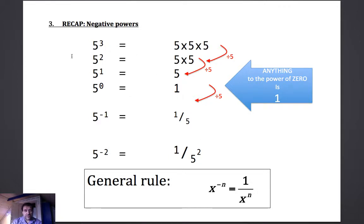The best way to approach this is to think of a pattern. 5 to the power of 3 is 5 times 5 times 5. 5 to the power of 2 is 5 times 5. 5 to the power of 1 is just 5. And you can see how you go down each line, dividing by 5 each time.